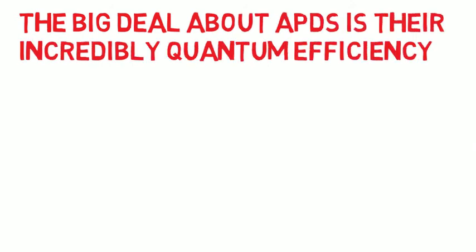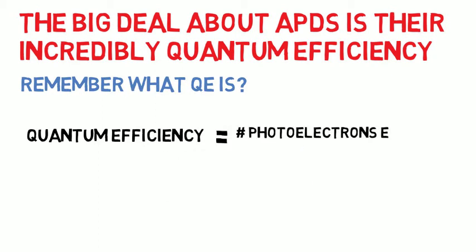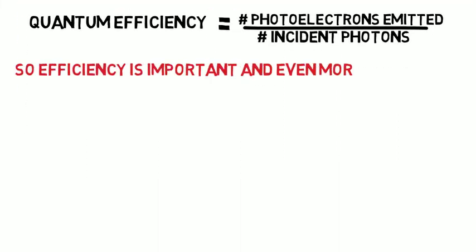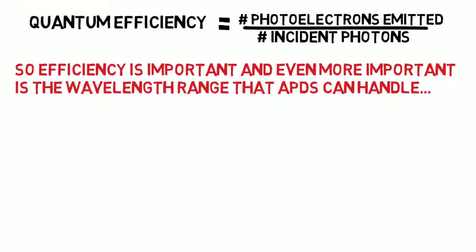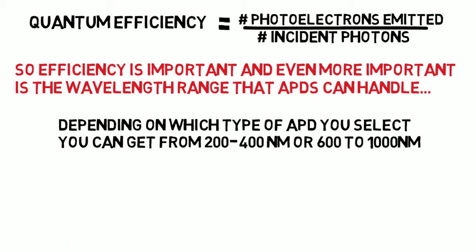The big deal about APDs is their incredible quantum efficiency. Quantum efficiency is the number of electrons emitted divided by the number of incident photons, so efficiency is important. Even more important is the wavelength range that the APDs can handle — this can be low, like 200 to 400 nanometers, or high up in the red, at 600 to 1,000 nanometers.